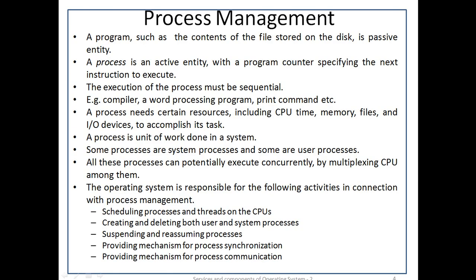A program is a passive entity, such as the content of a file stored on disk. A process is an active entity with a program counter specifying the next instruction to execute. The execution of a process must be sequential — the CPU executes one instruction after another until the process completes. Two processes may be associated with the same program and are considered two separate execution sequences.